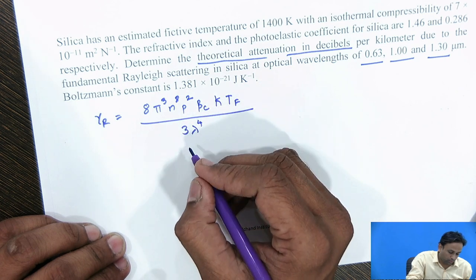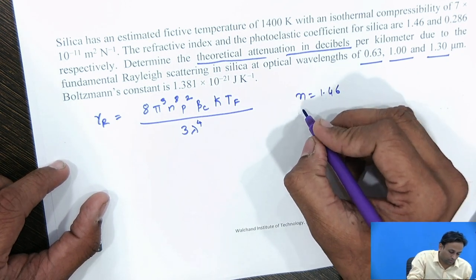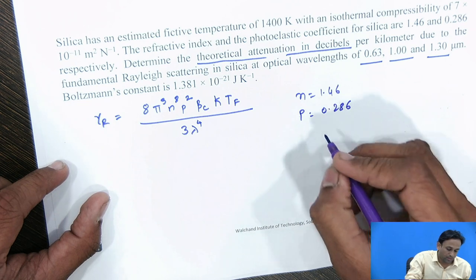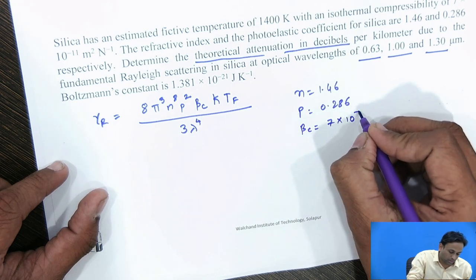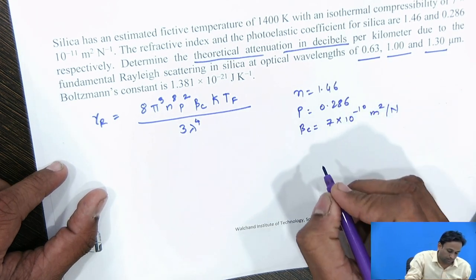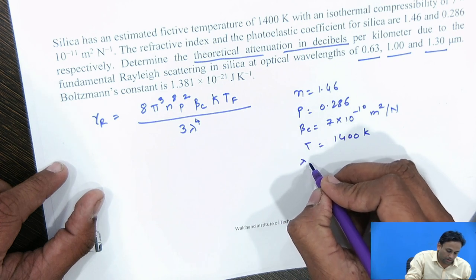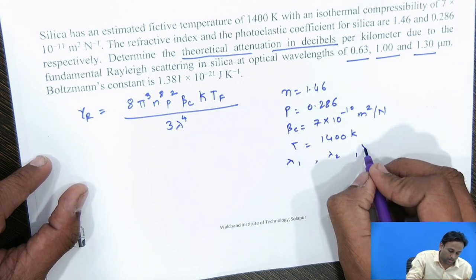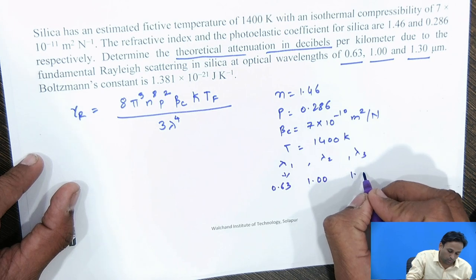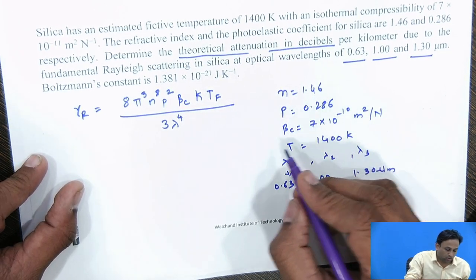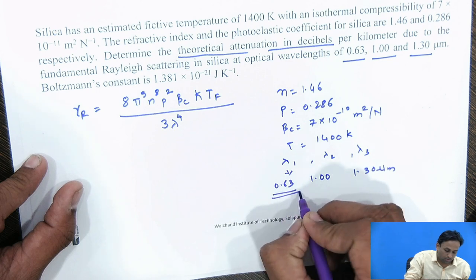In the formula, n is the refractive index, given as 1.46; the photoelastic coefficient p equals 0.286; the isothermal compressibility β_c equals 7 × 10⁻¹¹ m² per Newton; and the temperature T equals 1400 Kelvin. We need to find gamma R at lambda 1 = 0.63, lambda 2 = 1.0, and lambda 3 = 1.30 micrometers. By substituting all values, we will solve for Rayleigh scattering starting with lambda 1 at 0.63 micrometer.